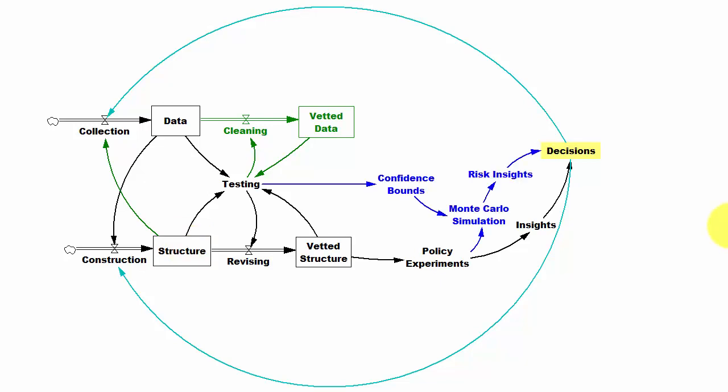Once you get further into testing, you can exploit the data not only to vet the model, but also to start informing the outputs. You can use it to establish confidence bounds on your parameters, and that in turn is input for doing things like Monte Carlo simulation that give you insights about risk to inform your decisions, as well as just ordinary insight about dynamics of the problem.